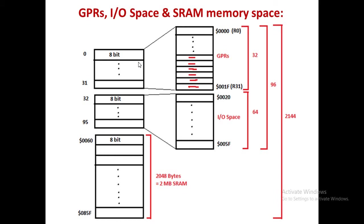To start with, we have 32 bytes of GPR — General Purpose Registers — which are R0, R1, R2, R3 up to R31. There are 32 general purpose registers. Then we have IO space: 64 bytes of IO space. So 32 bytes of GPR and 64 bytes of IO space.